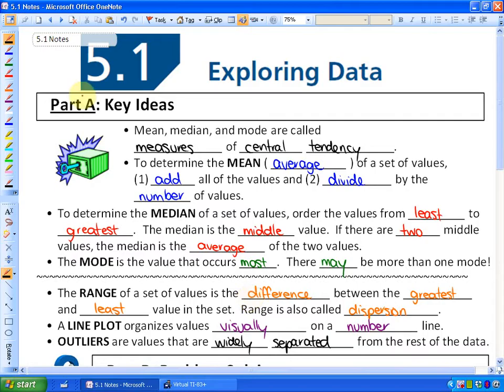The key ideas here are just some definitions. Mean, median, and mode are three terms, and they are each called measures of central tendency. They measure the center of statistics in different ways.